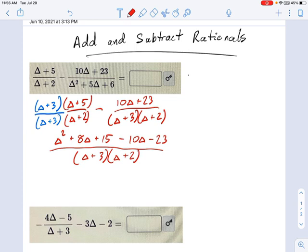And then the right one is minus 10 delta minus 23. Remember, this minus sign applies to both of these terms individually. So it's minus 10 delta and a minus 23. And then on the bottom, I don't see any need to multiply that out. So, collecting all my common terms, it's a delta squared. Let's see, I have 8 delta and negative 10 delta. So that's going to be negative 2 delta. And then plus 15 minus 23, I think that's a minus 8. Over delta plus 3, delta plus 2.